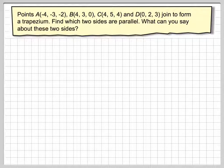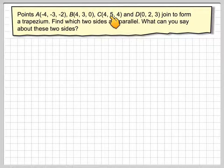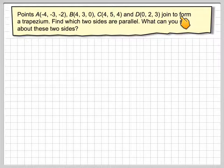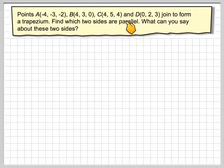Points A(-4, -3, -2), B(4, 3, 0), C(4, 5, 4) and D(0, 2, 3) join to form a trapezium. Find which two sides are parallel, what can you say about these two sides?